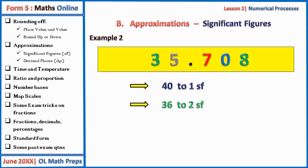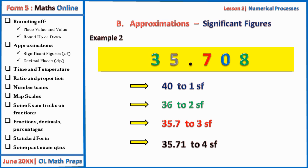To two significant figures, the second significant figure is at five, but the seven after five will affect it — we round up by one, making the number 36. Everything after the second significant digit is erased. To three significant figures we have 35.7, as zero will not affect the seven. To four significant figures we have 35.71.